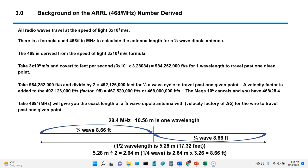So one of the things that's important is where did the 468 come from? All radio waves travel at the speed of light, 3 times 10 to the 8th, or 300 million meters per second. There is a formula used to calculate the length of a dipole antenna from the ARRL. If you take 468 and divide it by the frequency, that will give you the length of a dipole antenna. So where does 468 come from?